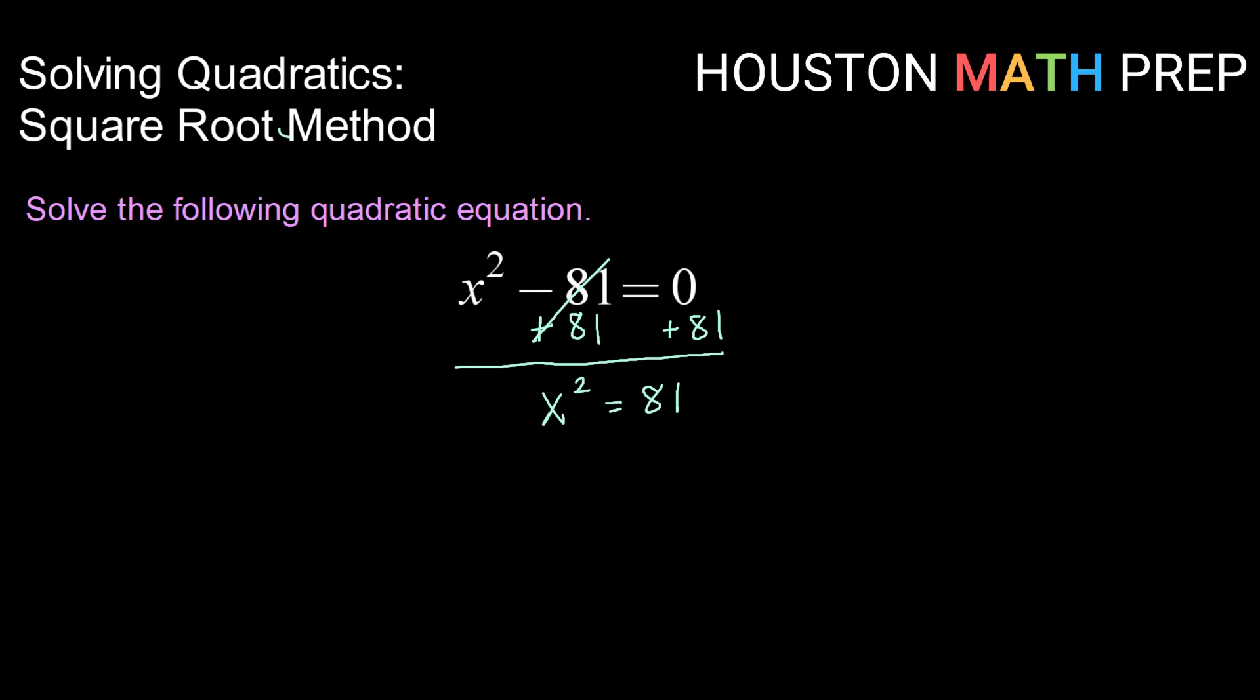From there, I want to get this to say x equals. So to undo x squared, I'm going to take the square root of both sides.